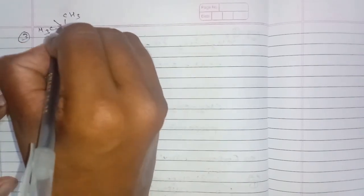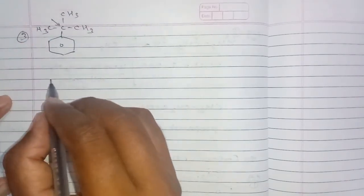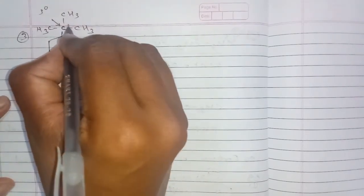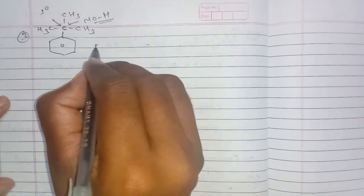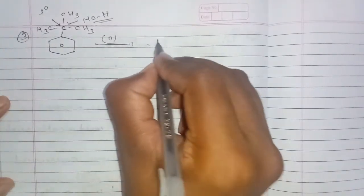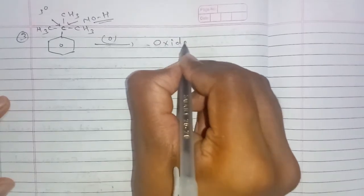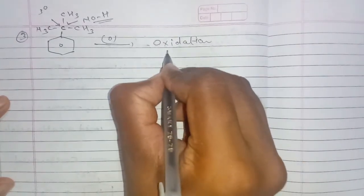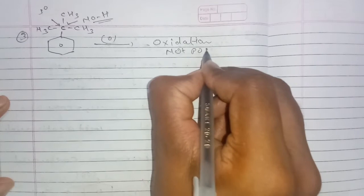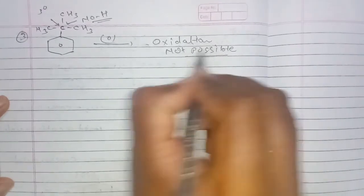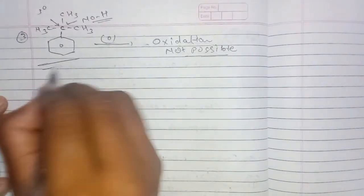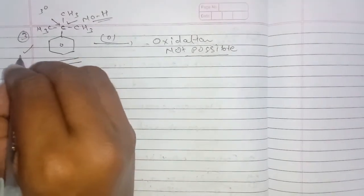This is a very important point: when there is a tertiary carbon attached to the benzene ring that has no hydrogen atom, oxidation is not possible. This is a very important exception to remember.